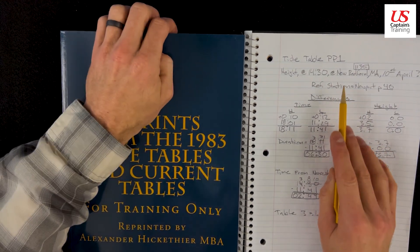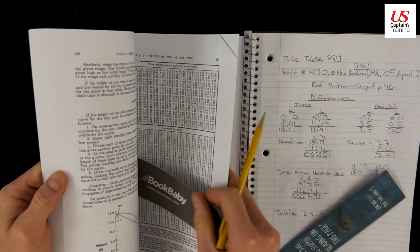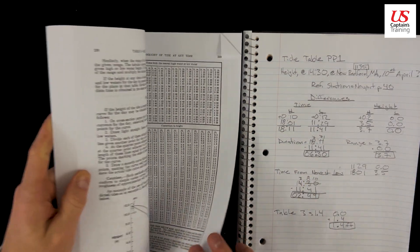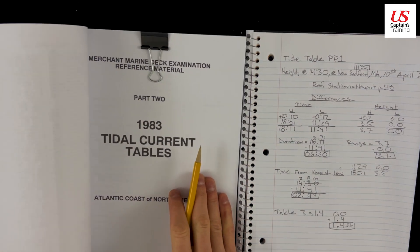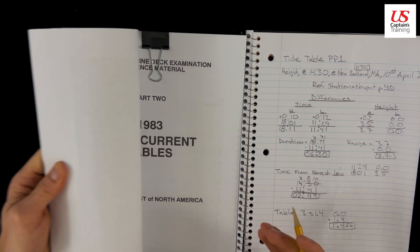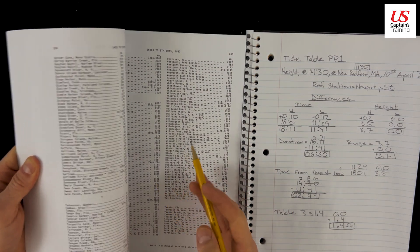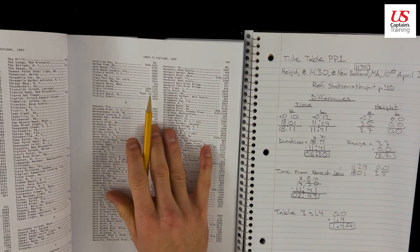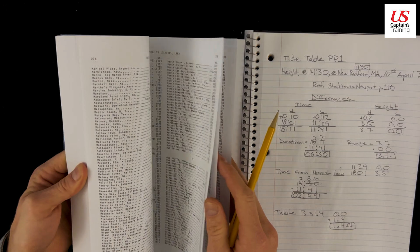And then we enter into the index to find New Bedford. Here's our reference book. The back half is the tide current tables, the front half is the tide tables. So we're in the front half. I always clip it off as soon as we start flipping. This is the index to stations. These are all the subordinate stations, so we find New Bedford.